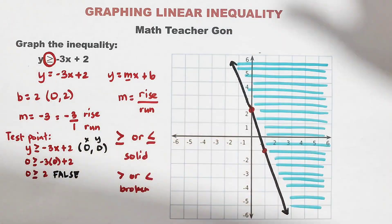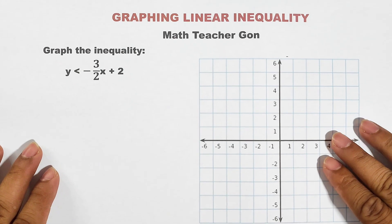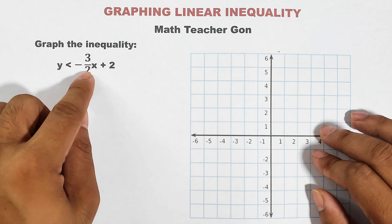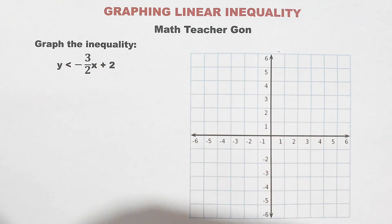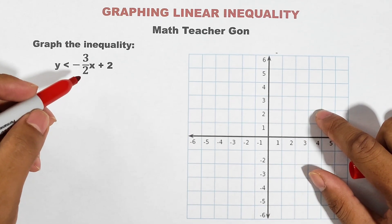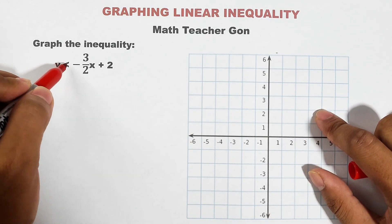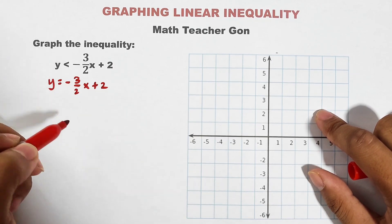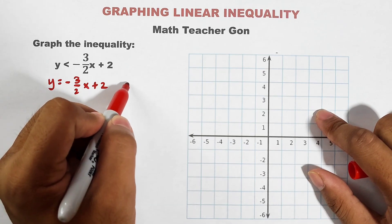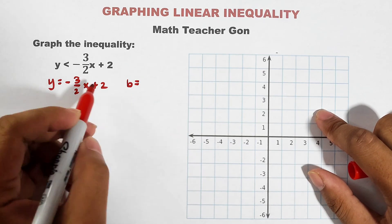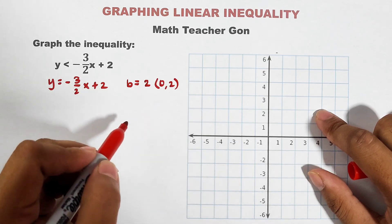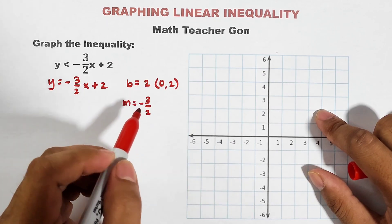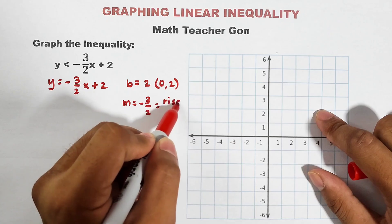Now let's move on to our next example. We are given the inequality y is less than negative 3 over 2x plus 2. Ignore the inequality symbol first — it becomes y = negative 3 over 2x plus 2. Get the slope and y-intercept: your y-intercept b is 2, giving the point (0, 2). The slope m is negative 3 over 2, so your rise is negative 3 and your run is 2.